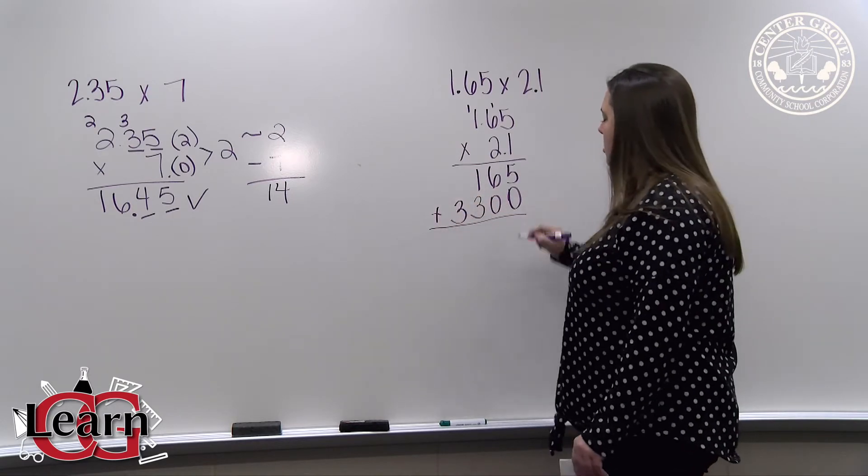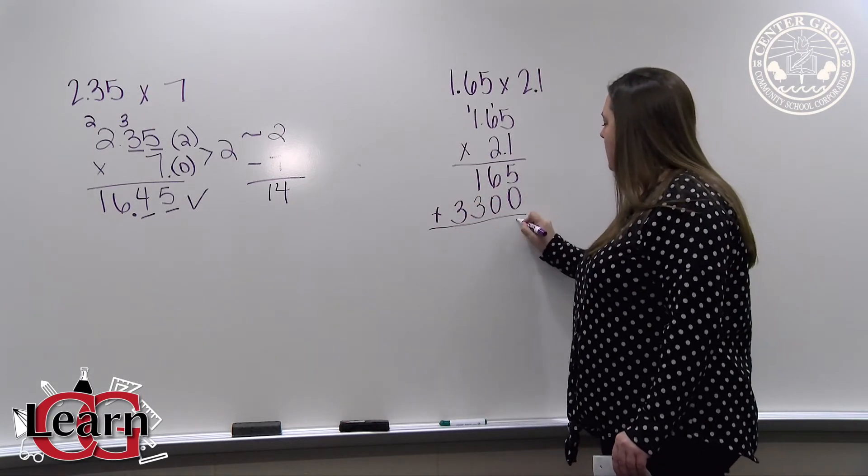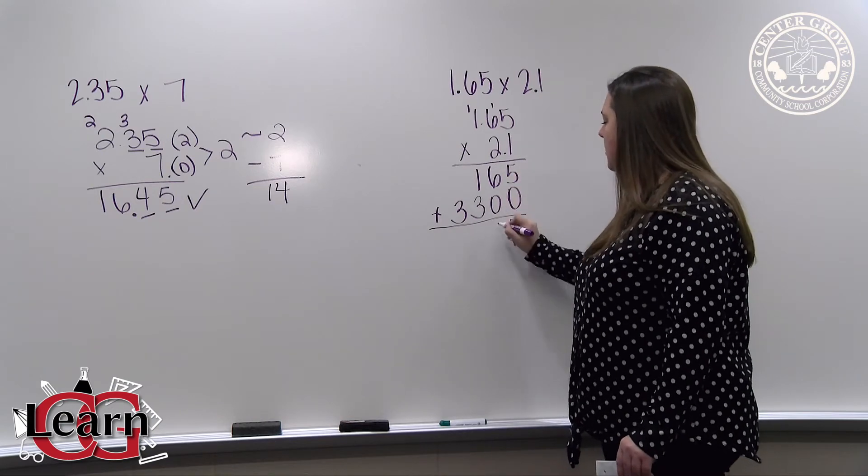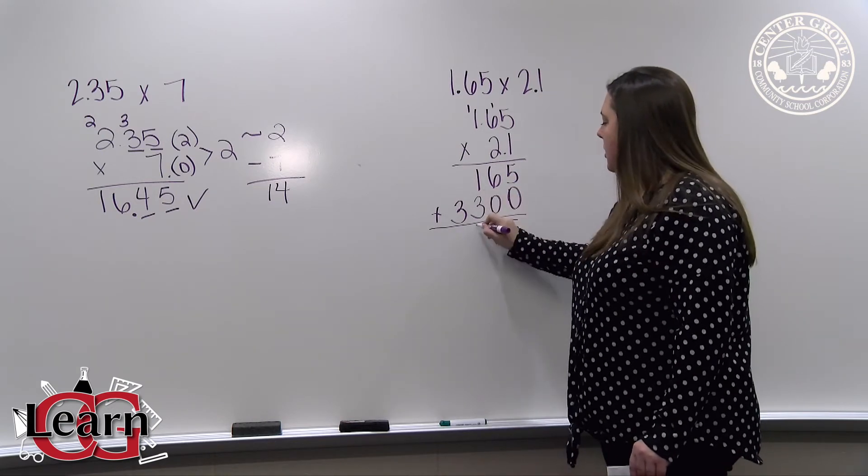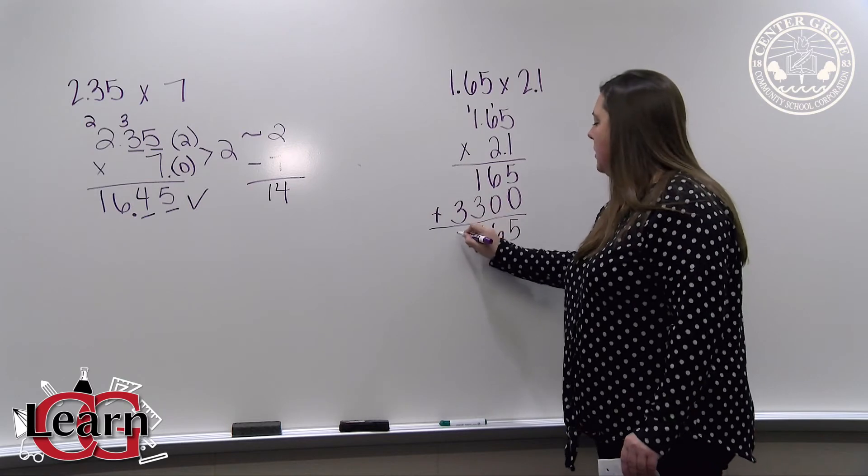We add our two partial products. 5 plus 0 is 5, 6 plus 0 is 6, 3 plus 1 is 4, and 3 plus nothing is 3.